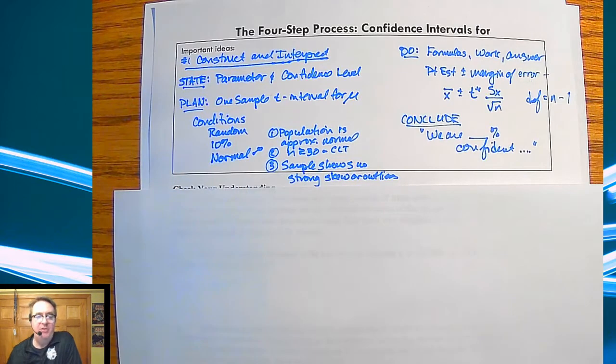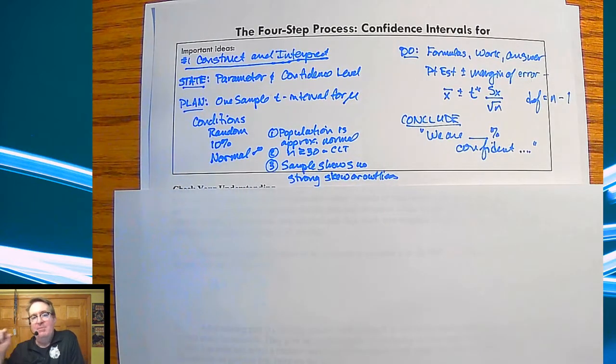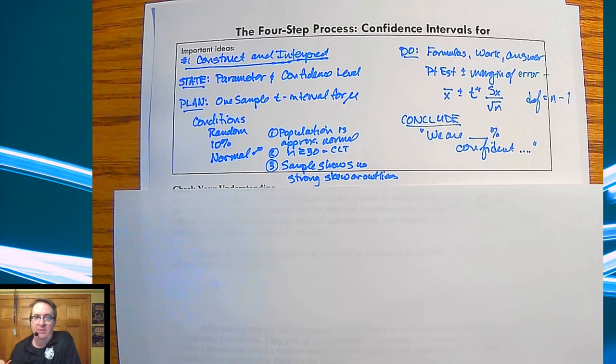Make sure you hit the three conditions. We need to be random and we need to be 10%. Those two are the same as we've been doing. The randomness allows us to take it out to the population. The 10% rule makes sure we don't have to worry about replacing anything.